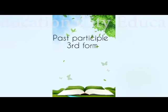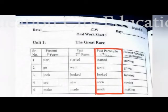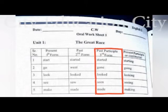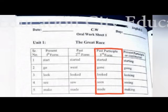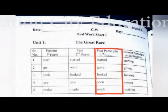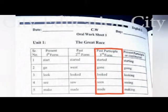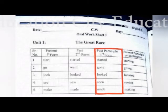Now comes the next one — past participle. Past participle is an action that happened a long time ago. In the third form we have: started, gone, looked, seen, made. So start becomes started, go becomes went and gone, look becomes looked and looked, see becomes saw and seen, make becomes made and made.